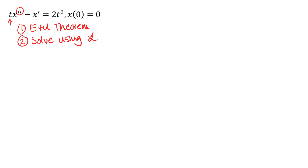First, thinking about what the existence and uniqueness theorem tells us, we want to make sure that we put it in the appropriate form. The existence and uniqueness theorem for linear higher order differential equations requires that we have a one for the coefficient of our leading term, our highest order term. So I'm going to start by dividing through by t. There is our differential equation, and then we think about the coefficient functions.